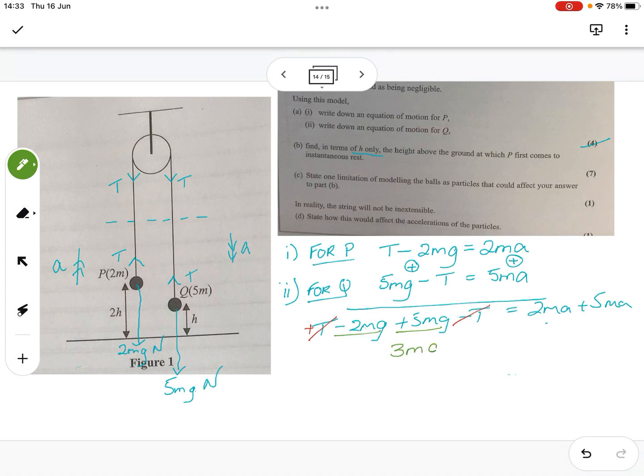And then we've got 5MG minus 2MG, which gives me 3MG. And I've got 2MA plus 5MA, which gives me 7MA. Now I can see that I've got M in both. We know the mass is not 0, so I'm going to cancel. I can divide through by M, which leaves me 3G over 7 equals the acceleration. And I will then write that in here. 3 sevenths G or 3G over 7. And that is my meters per second squared for acceleration. Okay. Brilliant.